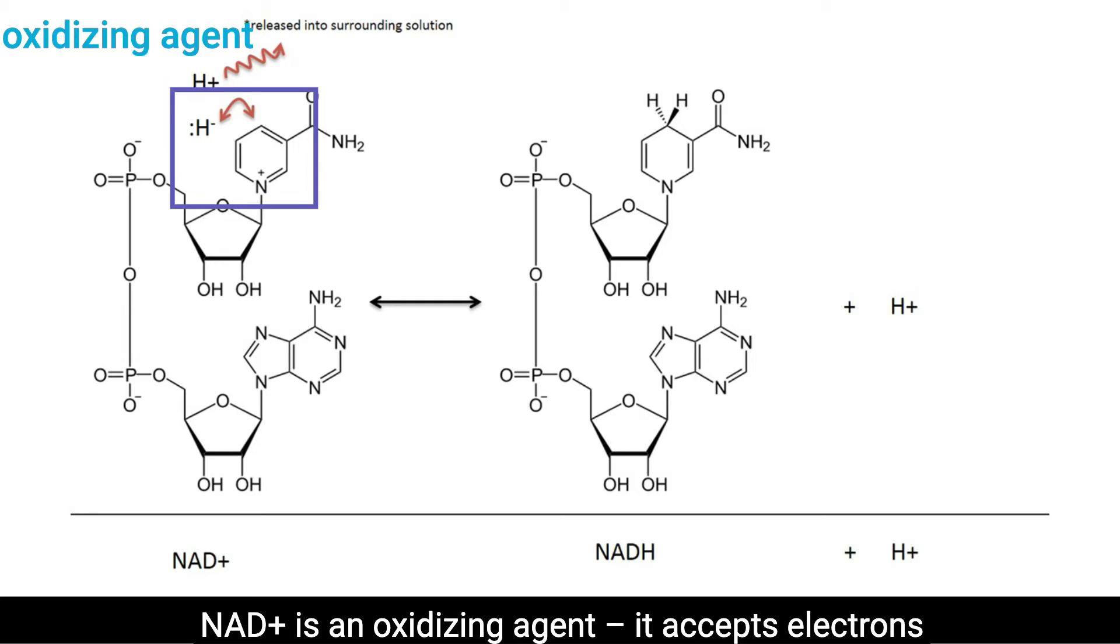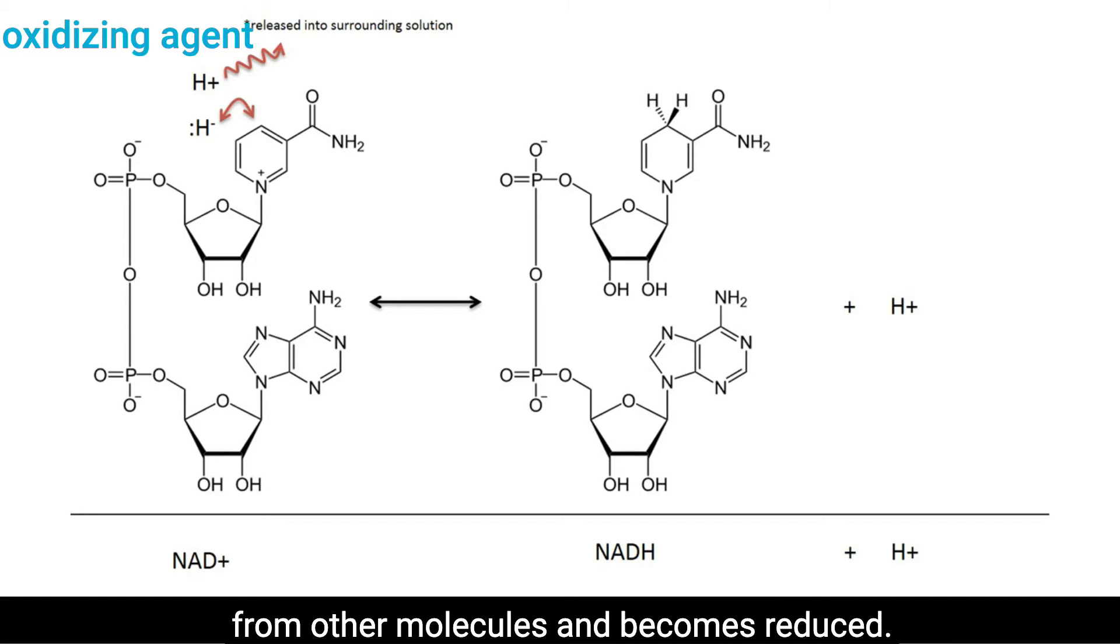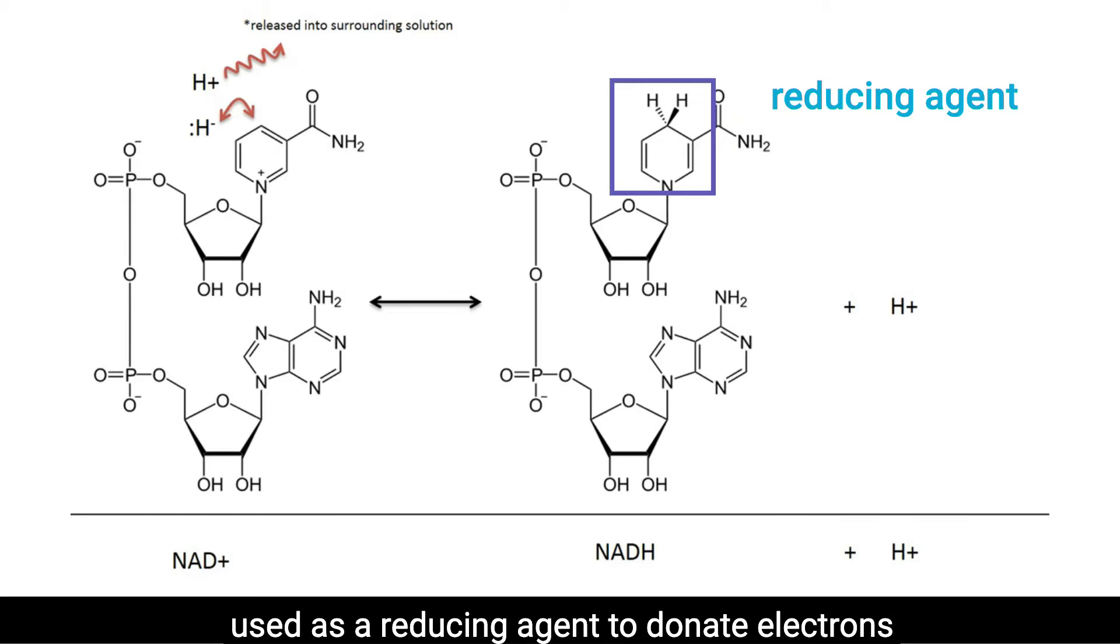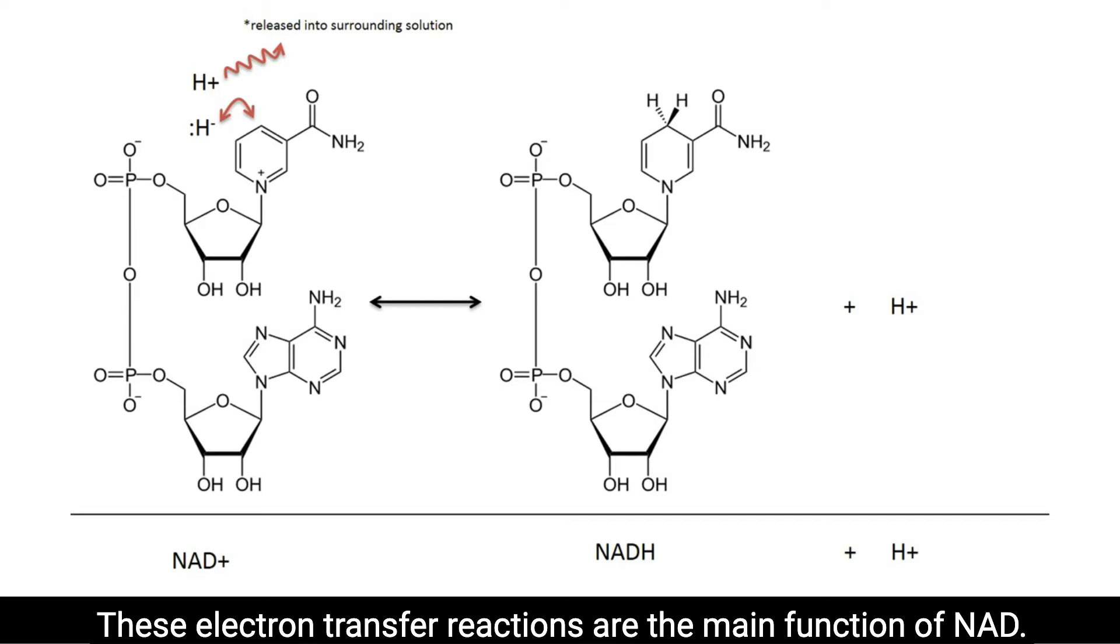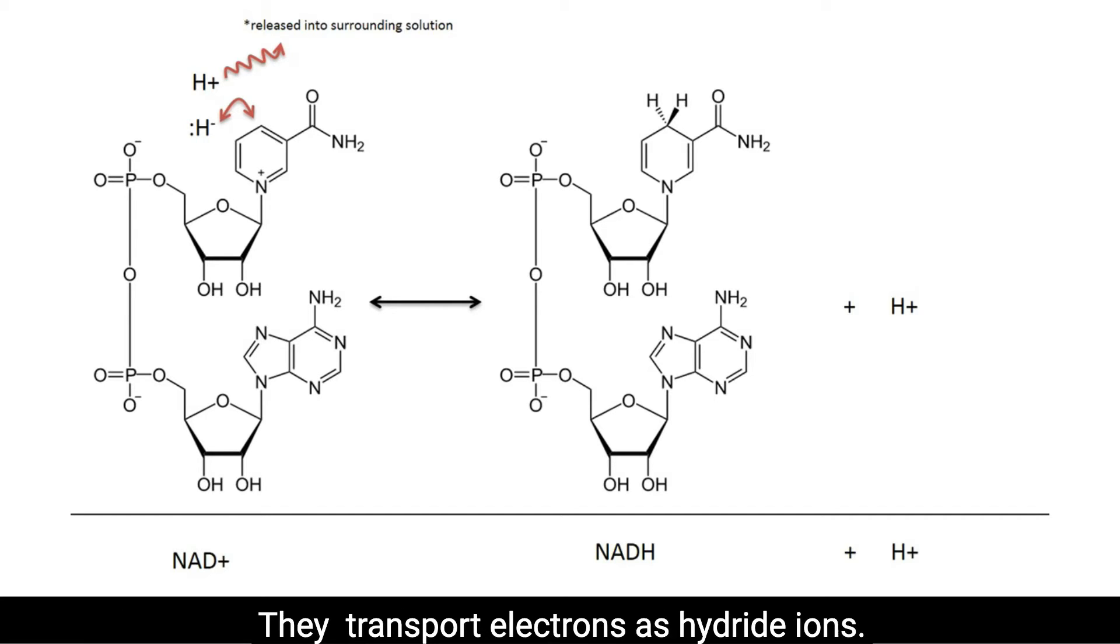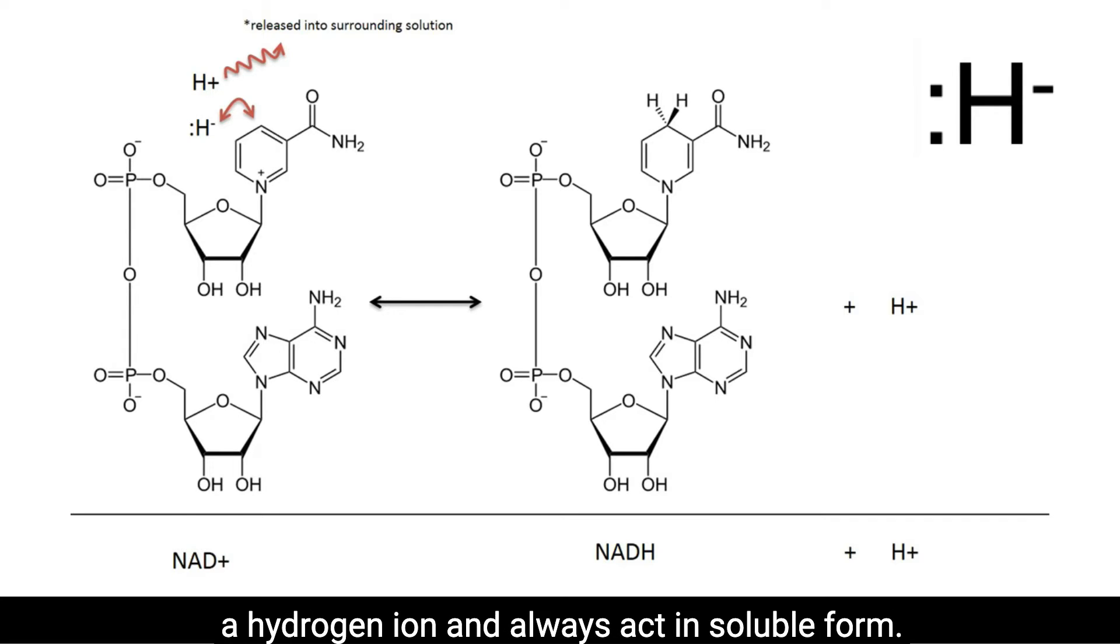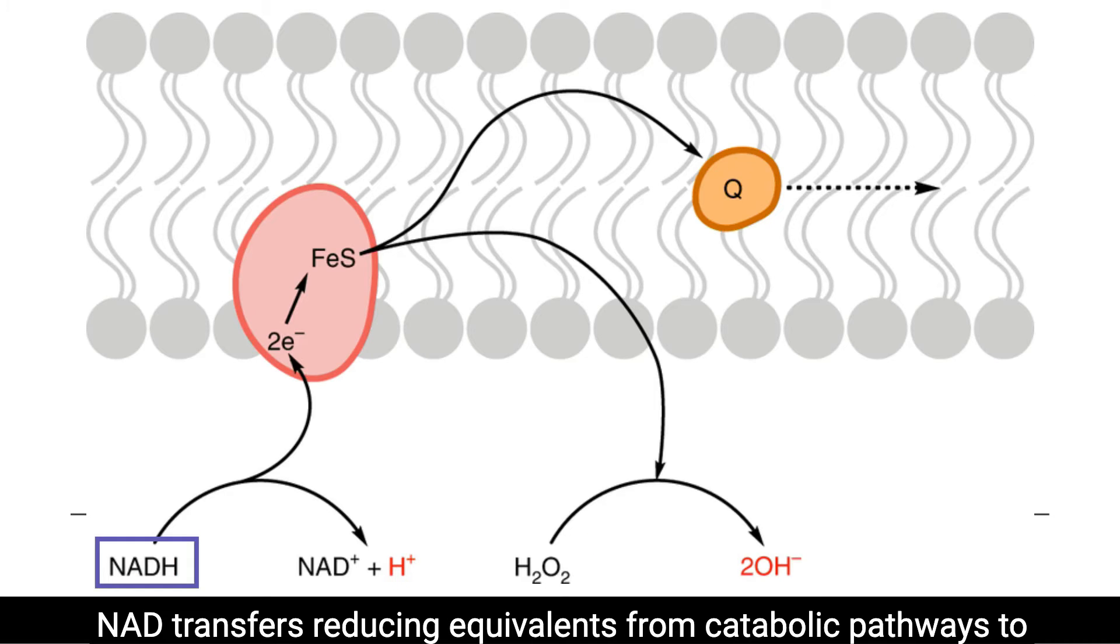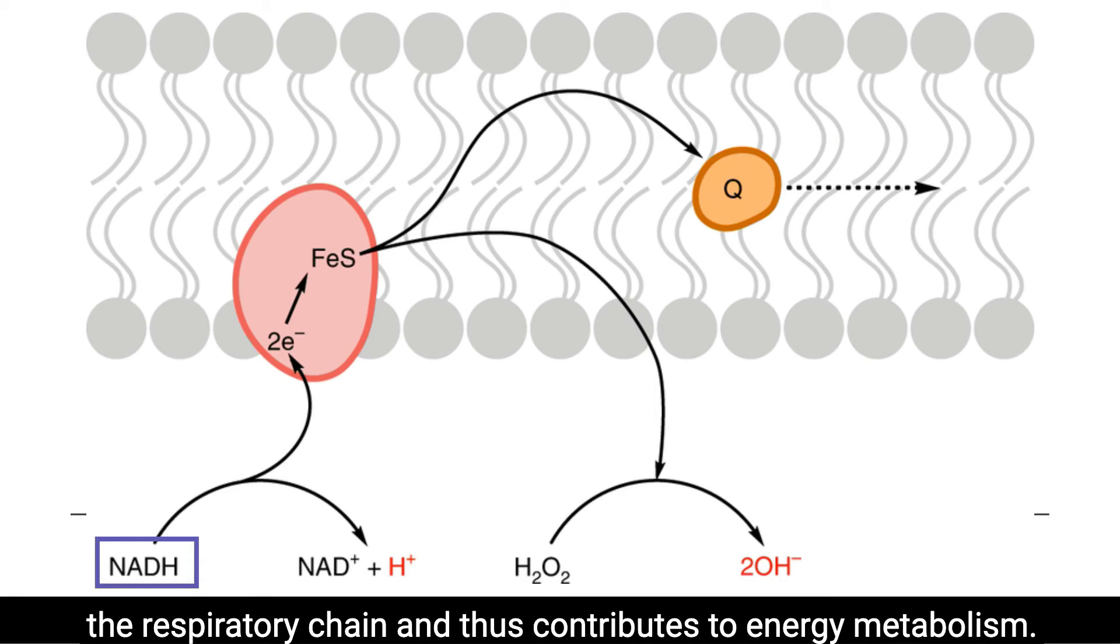NAD+ is an oxidizing agent. It accepts electrons from other molecules and becomes reduced. This reaction forms NADH, which can then be used as a reducing agent to donate electrons. These electron transfer reactions are the main function of NAD. They transport electrons as hydride ions. A hydride ion is composed of two electrons and a hydrogen ion and always act in soluble form. NAD transfers reducing equivalents from catabolic pathways to the respiratory chain and thus contributes to energy metabolism.